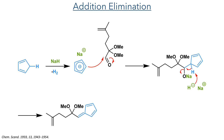The synthesis starts with an addition-elimination sequence. This reaction begins with the deprotonation of cyclopentadiene, and the resulting anion then attacks the aldehyde. The intermediate can then be deprotonated, promoting an elimination reaction to form an alkene.